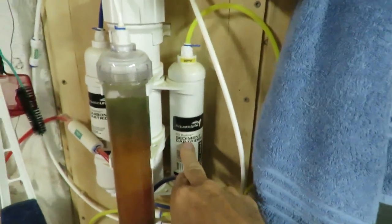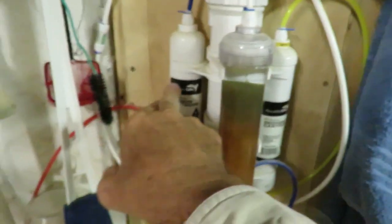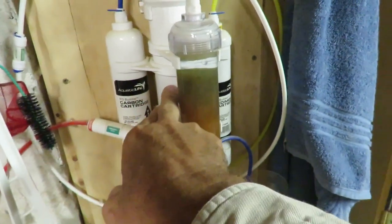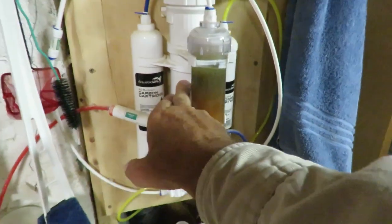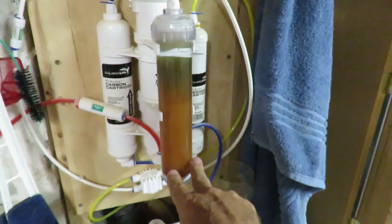What this does is this is your sediment cartridge here. You also have your carbon cartridge and then your reverse osmosis cartridge in here. But you can also buy it with the additional deionization cartridge.